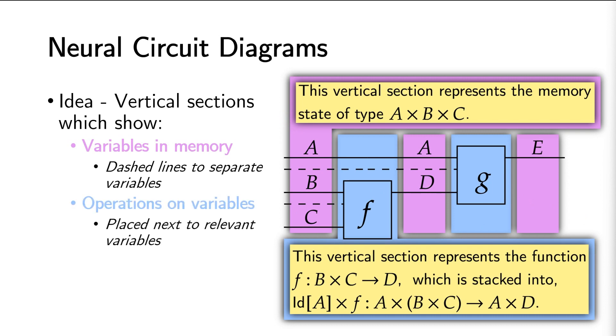Operations are placed next to the relevant variables on which they act. For neural circuit diagrams, we're almost always working with tensor data types. This reflects deep learning models.